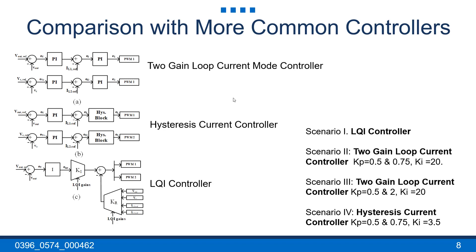For scenario 3, we have the KP values 0.5 and 2, while for the integrator values it is 24 both. And for the fourth scenario, we have the hysteresis current controller, with KP values 0.5 and 0.75, and KI is 3.5 for both controllers. In the next four slides, I will be showing the simulation results for the four scenarios.